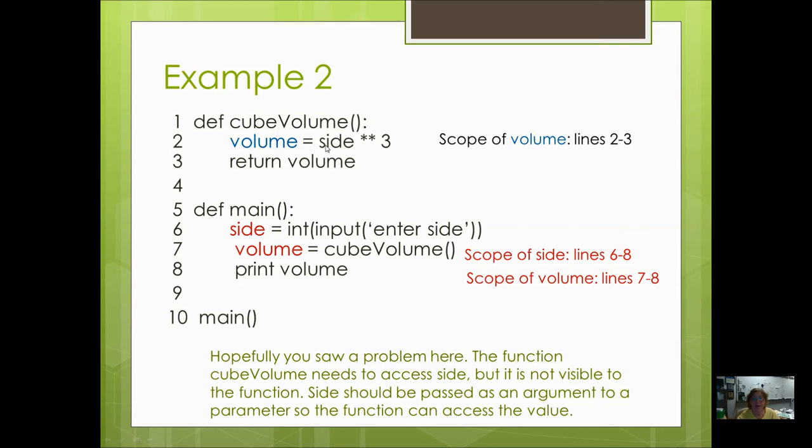Here we have volume, and it needs to access side. Can it access this side? This scope is only line 6 through 8, and volume is up here in line 2. So we've got a little problem here. Hopefully you saw a problem. The function cube volume needs to access side, but it is not visible to the function. So side should be passed as an argument here, and to the parameter here, so that volume can use side.